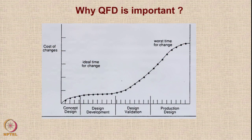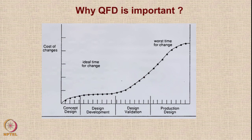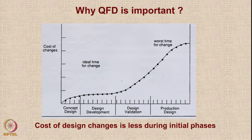Why is QFD important? This graph shows how the cost of changes increases as we proceed further in the product development cycle. During the concept design stage, the cost of changes is very low. During design and development, it is slightly higher, and that is the ideal time for any modifications. But as you go into design validation, costs rise. During the production design stage, making major changes is the worst time — the cost is very high. So in the initial phases, it is very important to get it right, so that later on we do not incur heavy expenditure.